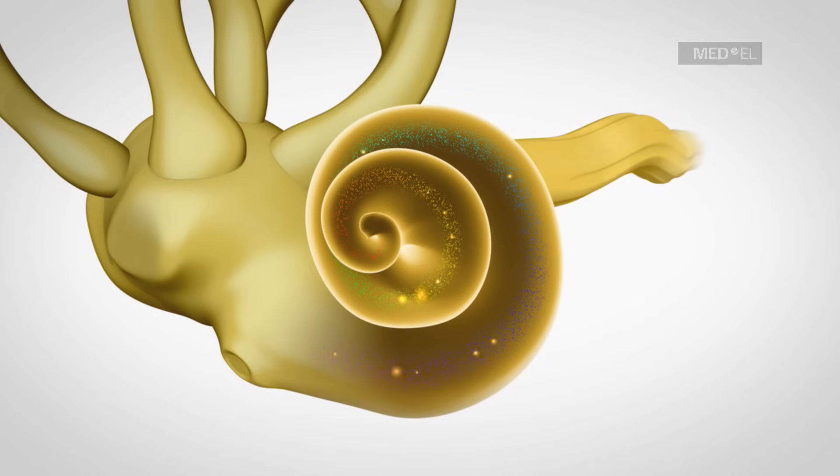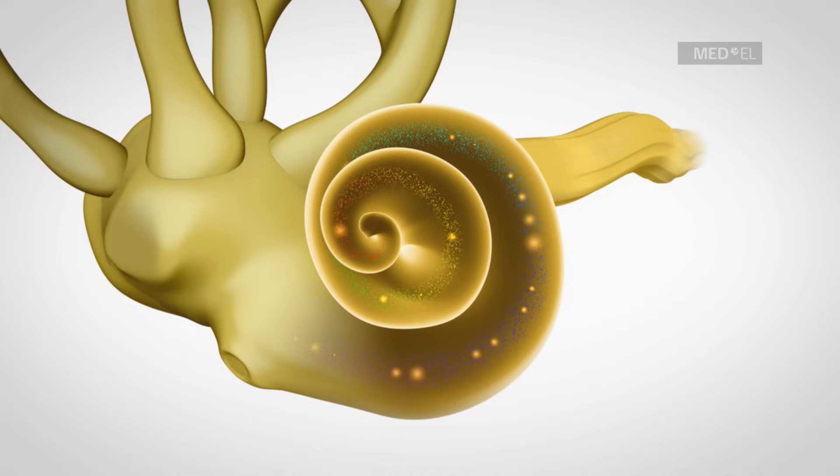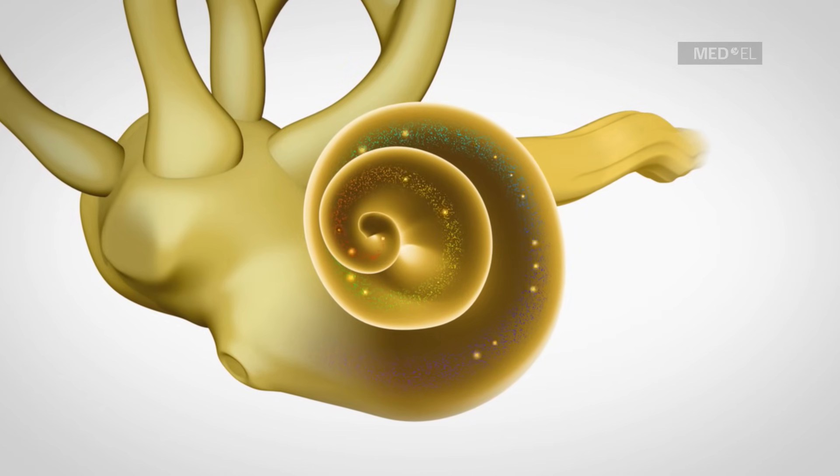When these hair cells are missing, the result is hearing impairment. When only some of the hair cells are missing, the hearing loss is classified as mild to moderate.